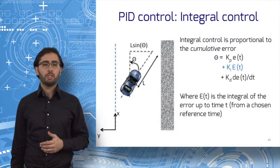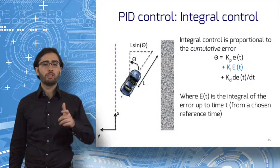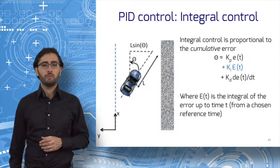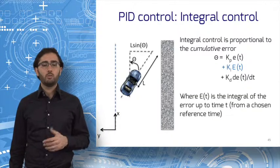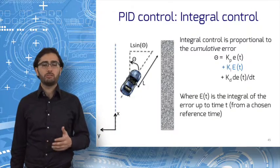Finally, one can include an integral gain term which is proportional to the cumulative error from some reference time t. In our car's case, as we will see, we observe that integral control gives disastrous results.